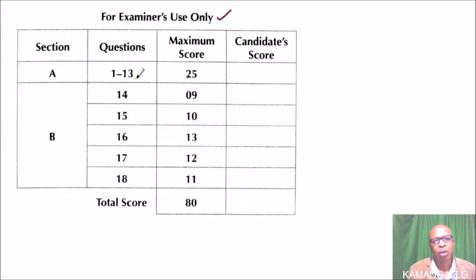From questions 1 to 13, maximum score is 25. The examiner will record your marks here, for example maybe 10 out of that. Then we have question 14 which is nine marks. The total score is 80, so out of the 80 you'll be able to add up all this to get the total. So that is the first page. Let's go to question number one.